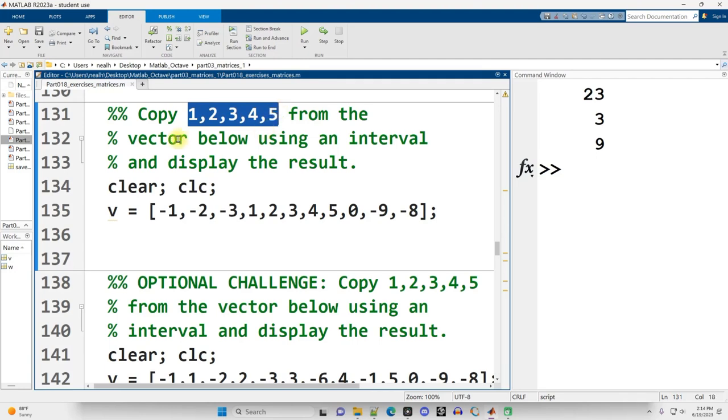Copy 1, 2, 3, 4, 5 from the vector below using an interval and display the results. Okay, so this time it's explicitly asking me to use an interval. Use that colon notation. And the 1, 2, 3, 4, 5 is right here in the middle. Let's count. Index 1, index 2, index 3, index 4, 5, 6, 7, 8.